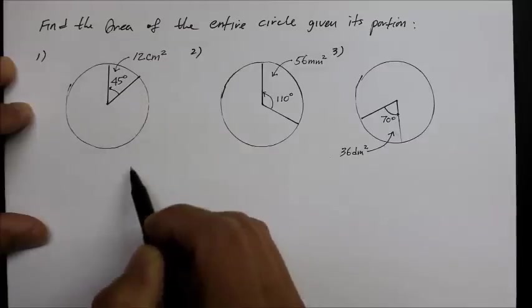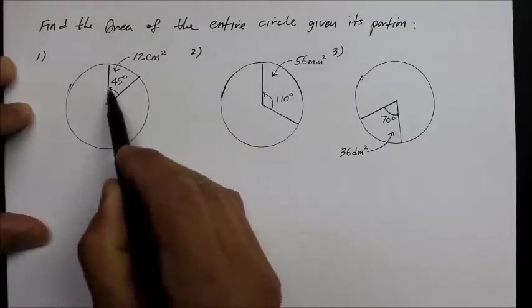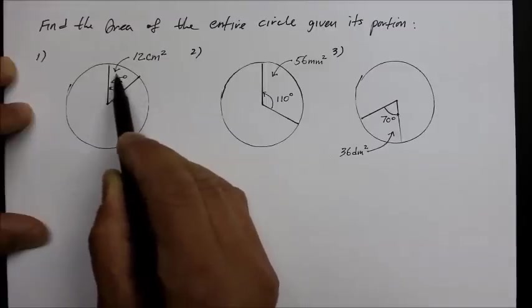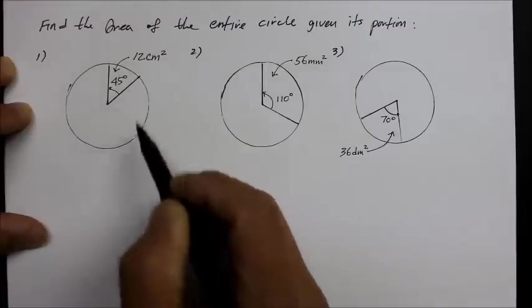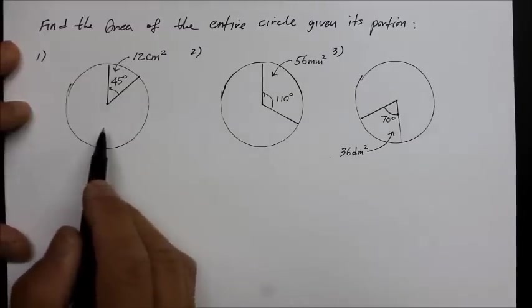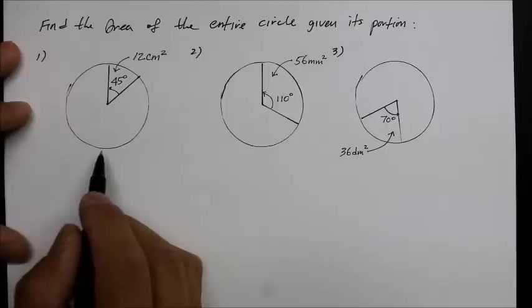See, no radius here, but it's giving you the degree. We're doing radians now. We're using radians, and given a portion of that, there's the area of that. So, what's the area of the entire thing? Let me demonstrate number one for you. The way you want to do this is as follows.